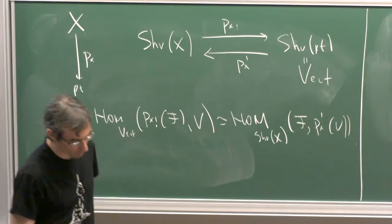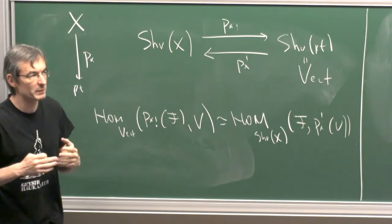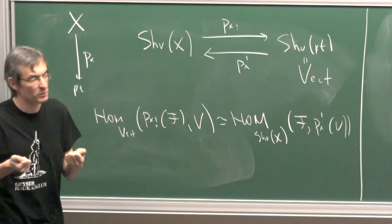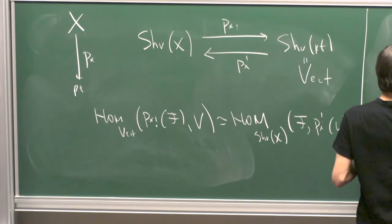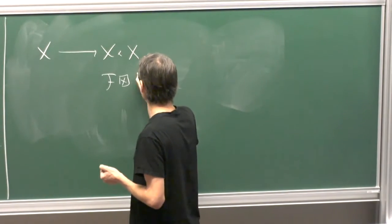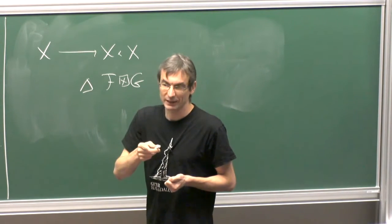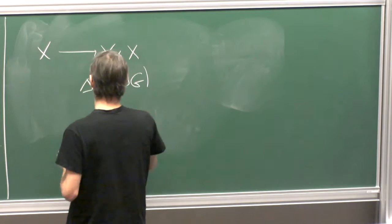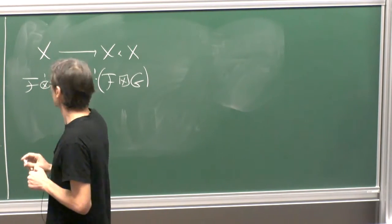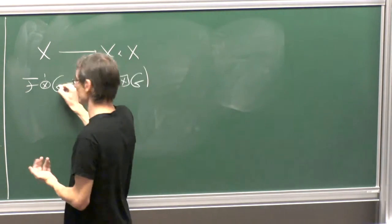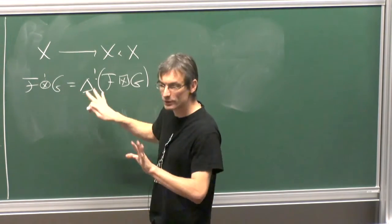The adjointness means: Hom in the category of vector spaces from some object F to V equals Hom in the category of sheaves from F to P_X upper-shriek of V. Now I want to talk about sheaves of commutative algebras. The tensor product I use is the internal shriek tensor product — I pull back along the diagonal with a shriek. I prefer shriek to star, for good reasons. This defines a symmetric monoidal structure and it makes sense to talk about commutative algebras in the ∞-category sense.